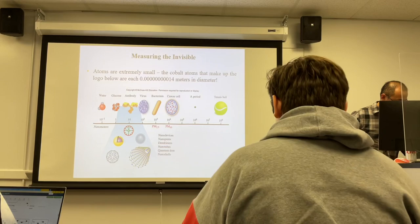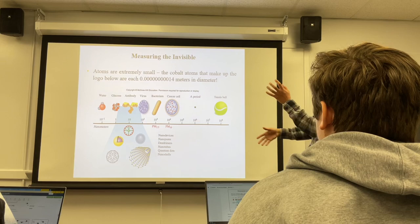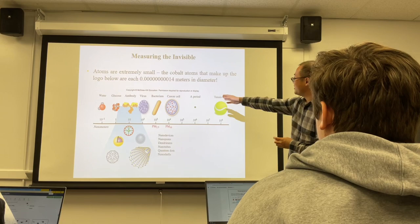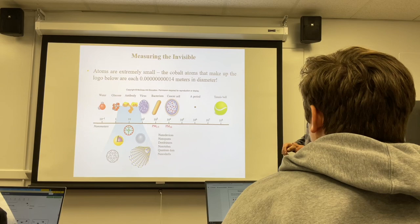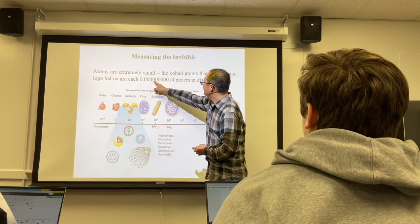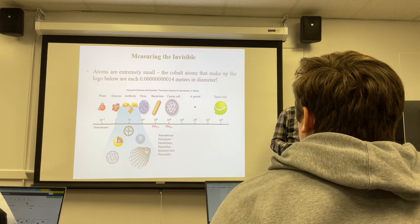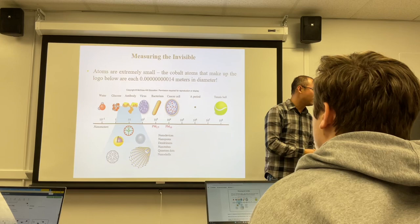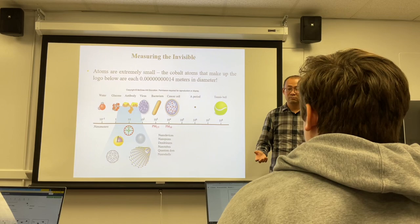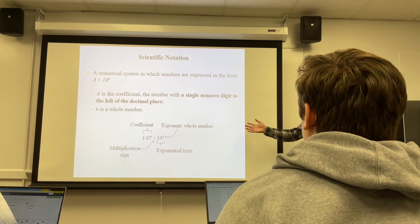This picture shows you the size of atoms compared to other small objects — bacteria, viruses, antibodies, glucose molecules. Atoms are extremely small, about 0.0000000001 meters (10⁻¹⁰ m) in diameter. When we deal with very small or very large numbers, we use scientific notation — a number in the format of a single non-zero digit (1–9) possibly with decimals, multiplied by a power of ten.